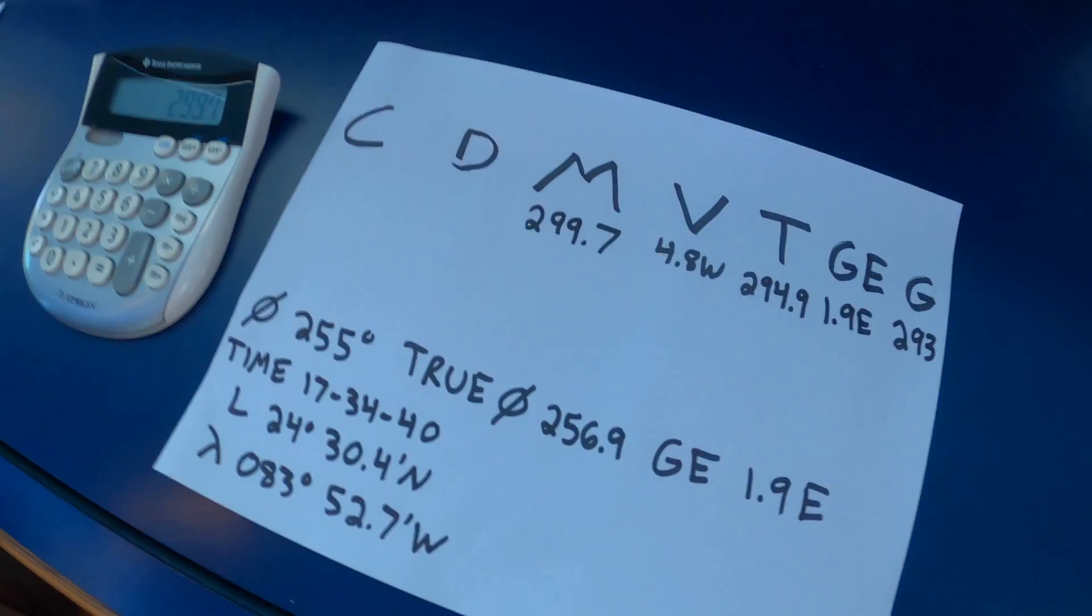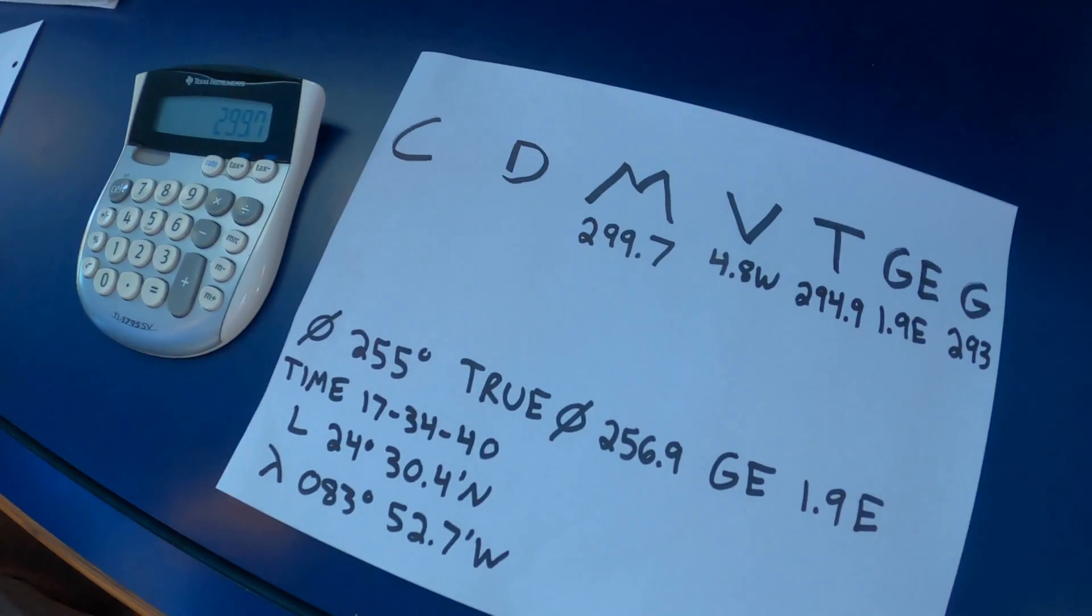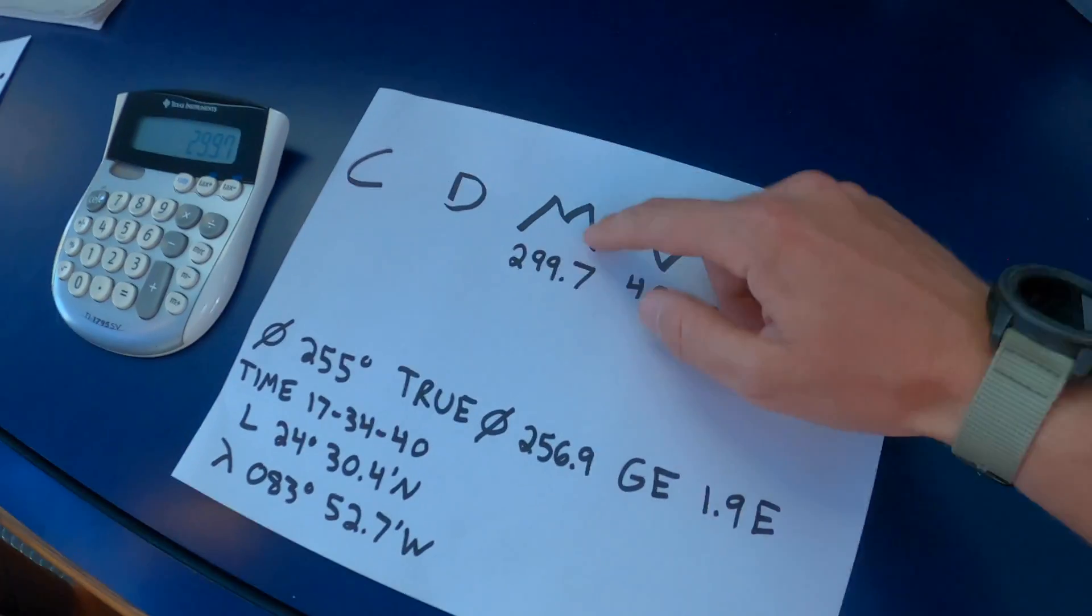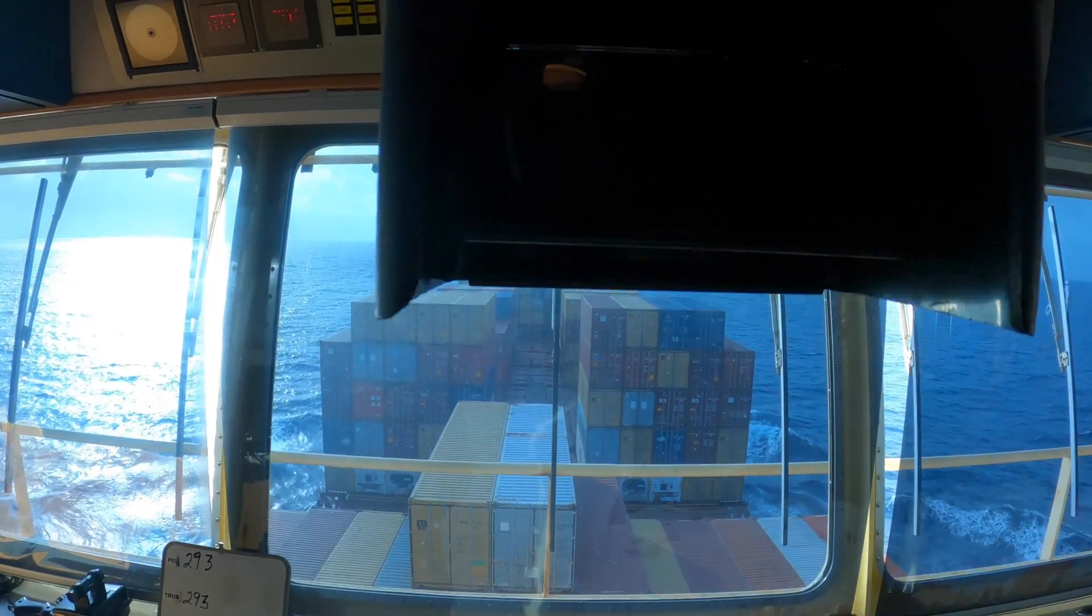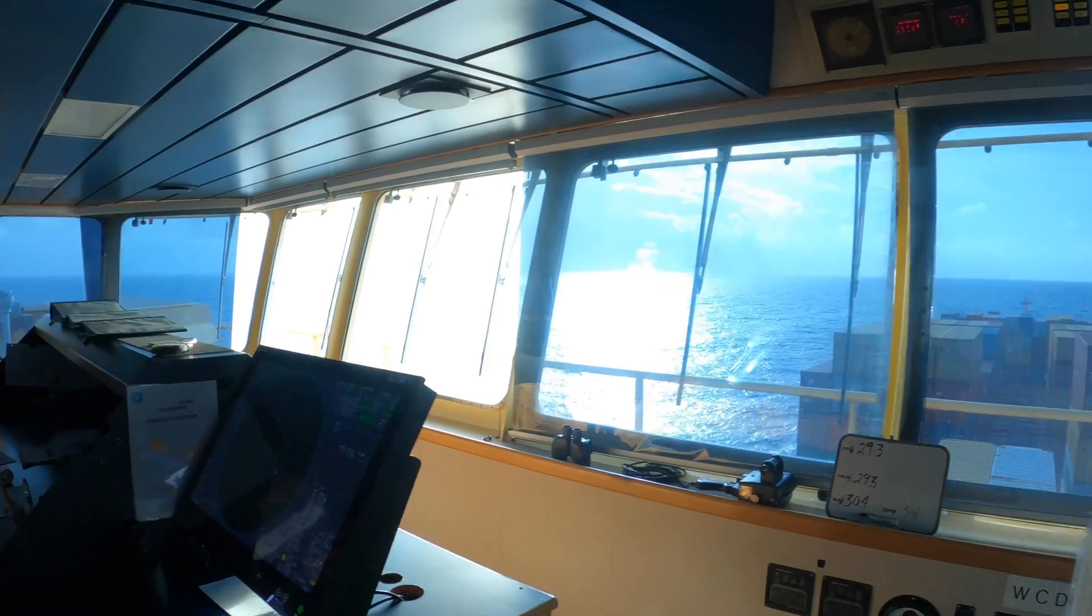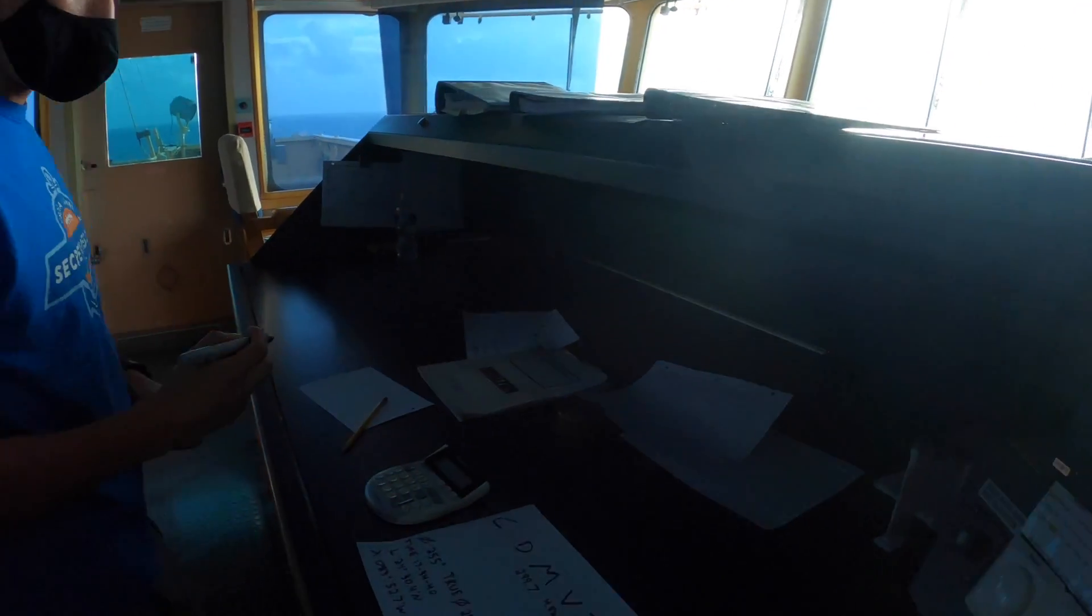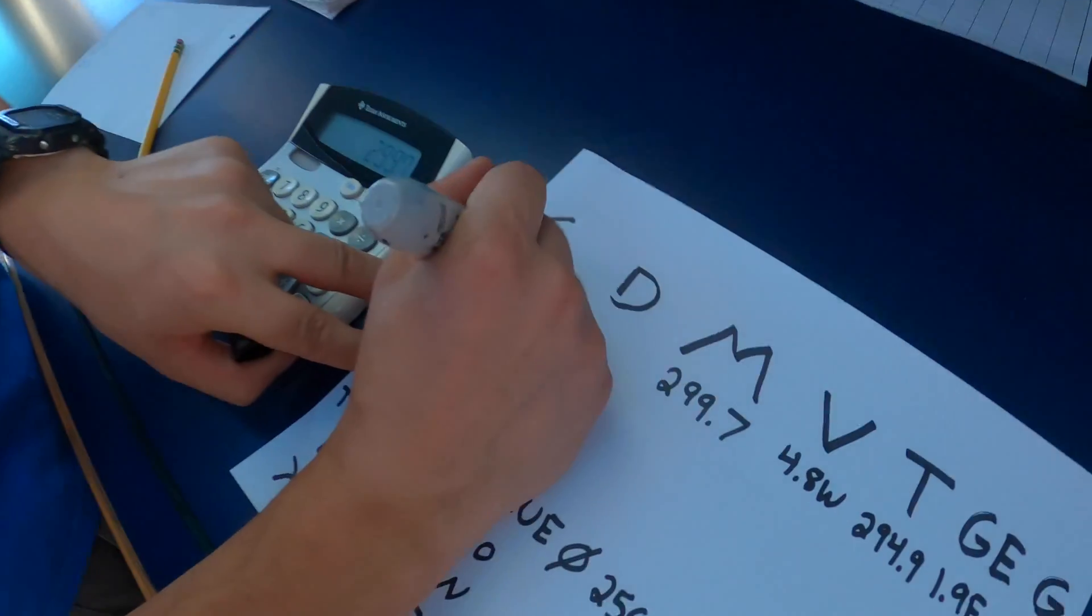And then lastly, we're going to go look at our magnetic compass, our standard compass, and compare that to this number to figure out our deviation. So that's our magnetic compass. It does read 304 degrees.